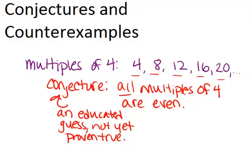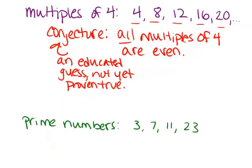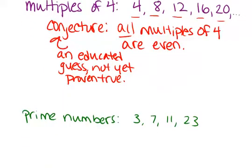So let's look at another example. Say we were thinking about prime numbers, and you thought of just some of them. You thought about 3, 7, 11, and 23 are prime numbers. And based on those, I'm going to make a conjecture about prime numbers. Because all 4 of those prime numbers are odd, I'm going to make the conjecture that all prime numbers are odd.